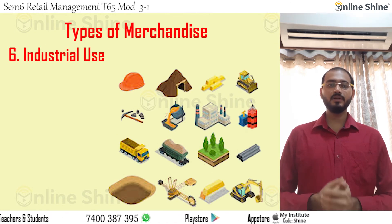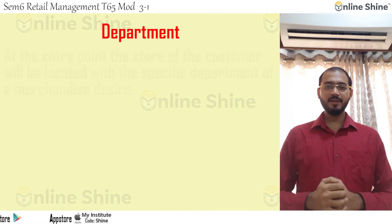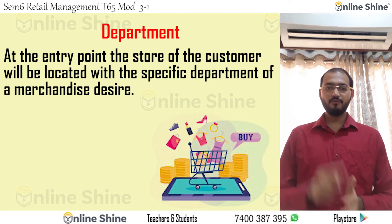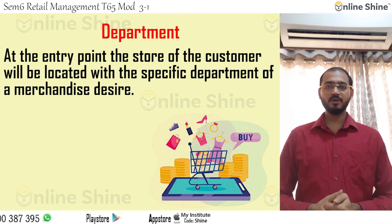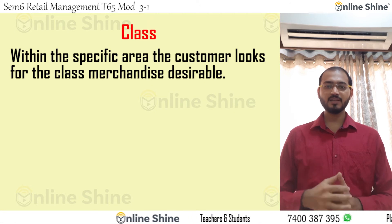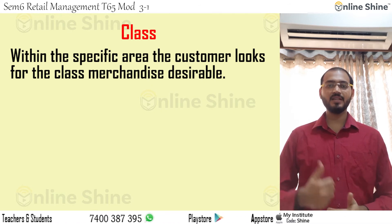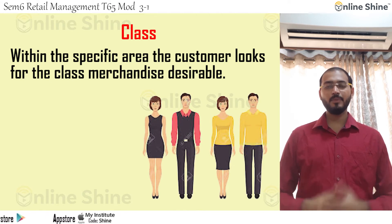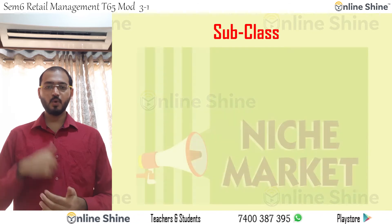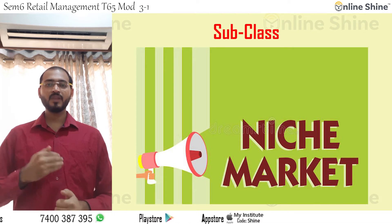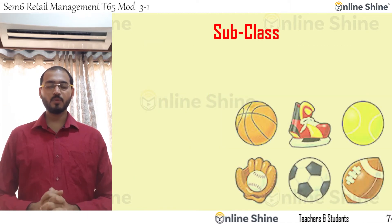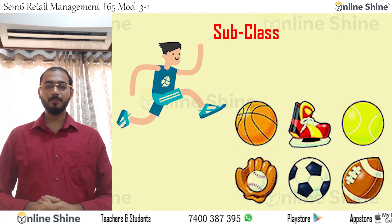Industrial use refers to purchase by industry, for example raw materials. At the department level, a store will have specific departments such as men's, women's, junior fashions, food court, games zone, and spa. Within a specific area, the customer looks for class merchandise — for example, blouses and dresses for females, shirts and pants for menswear. Subclass includes designer products, sports equipment, and shirts with printed logos — specialized items not needed by everyone.